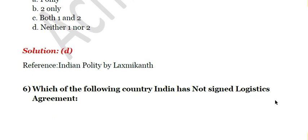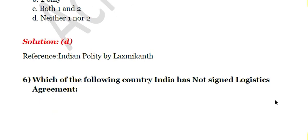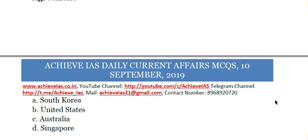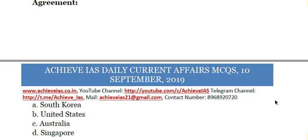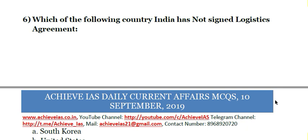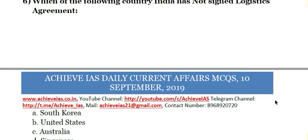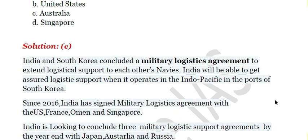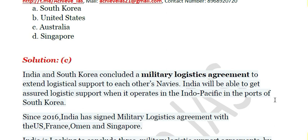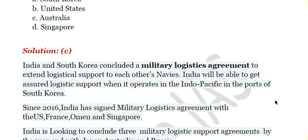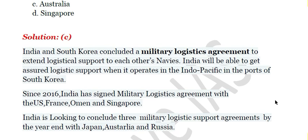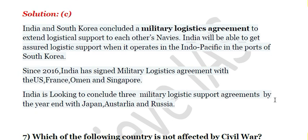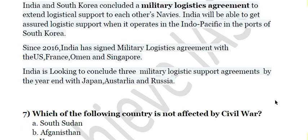The sixth question: With which of the following countries has India not signed a logistics agreement? A) South Korea, B) United States, C) Australia, D) Singapore. The answer is C, Australia. India and South Korea concluded a military logistics agreement, and India also has such agreements with the USA and Singapore. Since 2016, India has signed military logistics agreements with the US, France, Oman, and Singapore. India is looking to conclude agreements with Japan, Australia, and Russia.